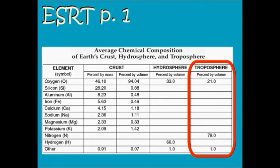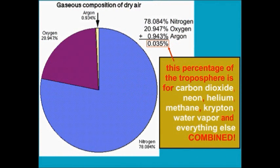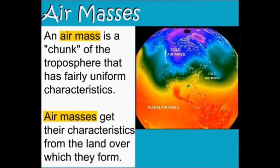The composition of the troposphere is 21% oxygen, about 78% nitrogen, and that leaves about 1% for everything else. About 93% of that remaining 1% is made up of a gas called argon, which means that 0.035% is all that's left for everything else in the atmosphere.